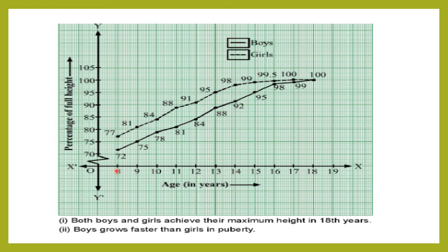For girls: age 8: 72%, age 9: 75%, age 10: 78%, age 11: 81%, age 12: 84%, age 13: 88%, age 14: 92%, age 15: 95%, age 16: 98%, age 17: 99%, age 18: 100%.